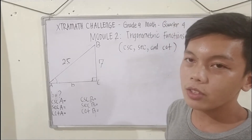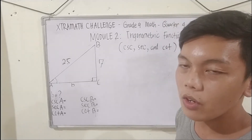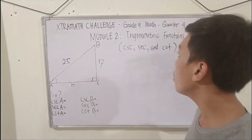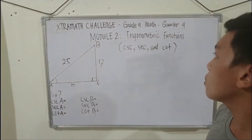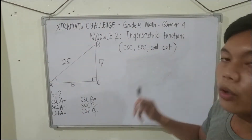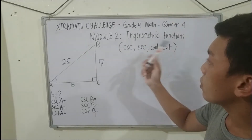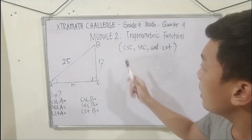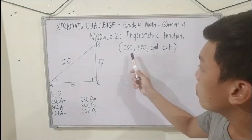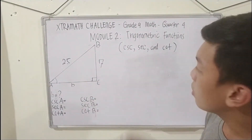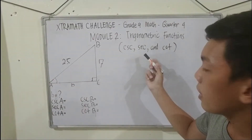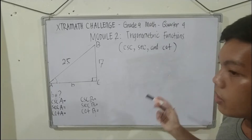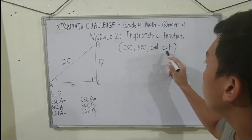Hello mga Caviters! I'm Habitur Owen on our Extra Math Challenge. Our Extra Math Challenge for today is all about grade 9 math lessons in quarter 4 module 2, and it is all about trigonometric functions — namely, cosecant which is the reciprocal of sine, secant which is the reciprocal of cosine, and cotangent which is the reciprocal of tangent.